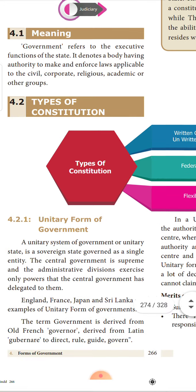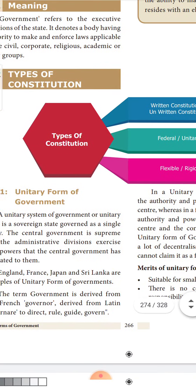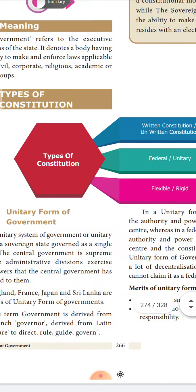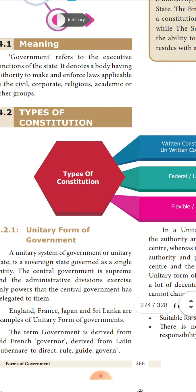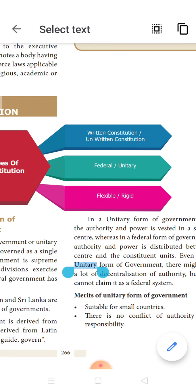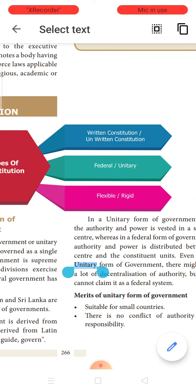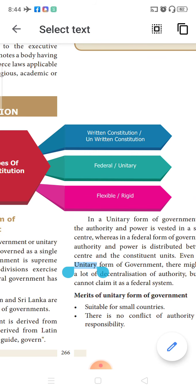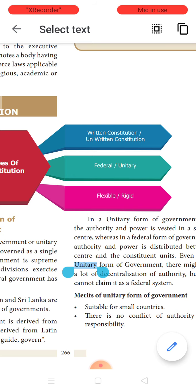The types of constitution include: written constitution or unwritten constitution, federal or unitary constitution, and flexible and rigid constitution. The constitution is basically the bylaws which contains all the rules and regulations that have to be followed by the government.